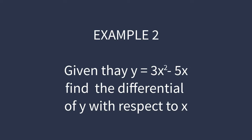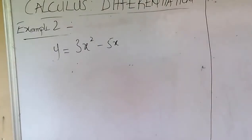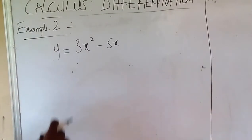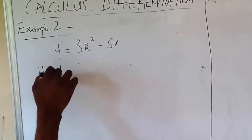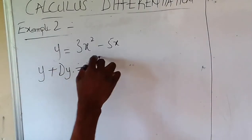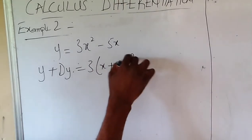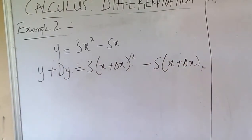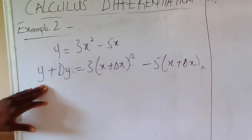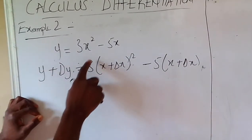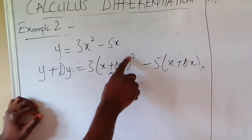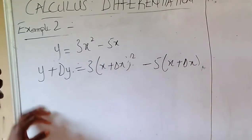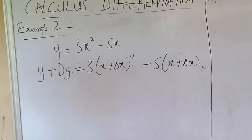Example two: given that y equals 3x squared minus 5x, find the differential of y with respect to x. Applying our steps, the first step is to add the increment of y to y, and the increment of x to x, wherever x appears. Whenever you see x, you add the increment δx to it; whenever you see y, you add δy to it. That's the first step.